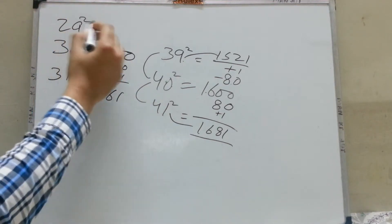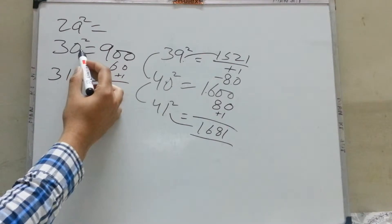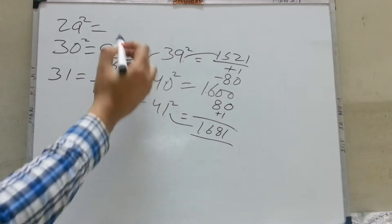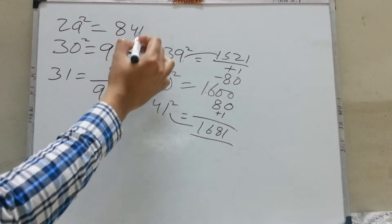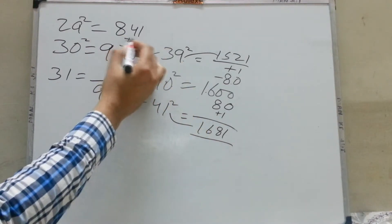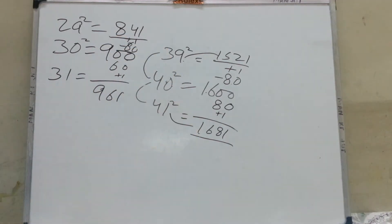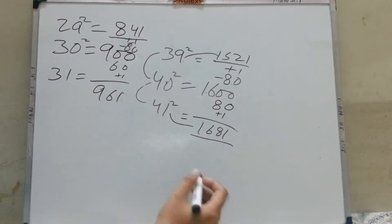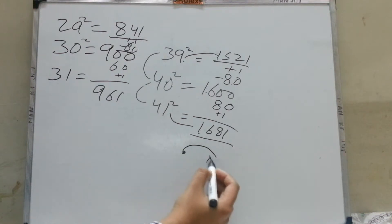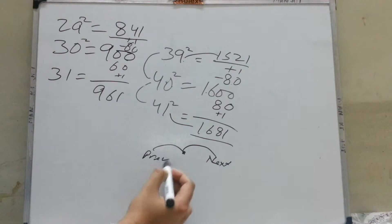The square of 29 will be 900 minus twice of 30, which is 60. So 900 minus 60 is 840, and your answer will be 841 because you subtract 60 but add 1. So if you remember the square of any digit, you can calculate the square of the next digit as well as the previous digit.